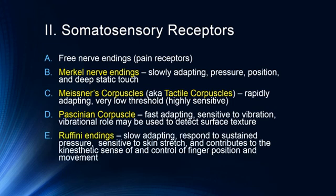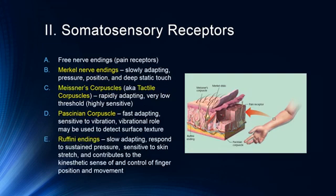Ruffini endings are slow adapting. They respond to sustained pressure and are sensitive to skin stretch, contributing to our kinesthetic sense and control of finger position and movements. So someone who plays the piano will know where their fingers are on the piano because of responses from the Ruffini endings. In the anatomical figure, pain receptors are free nerve endings. Meissner's corpuscles and Merkel discs are shallow, while Ruffini endings and Pacinian corpuscles are located deeper within the dermis.